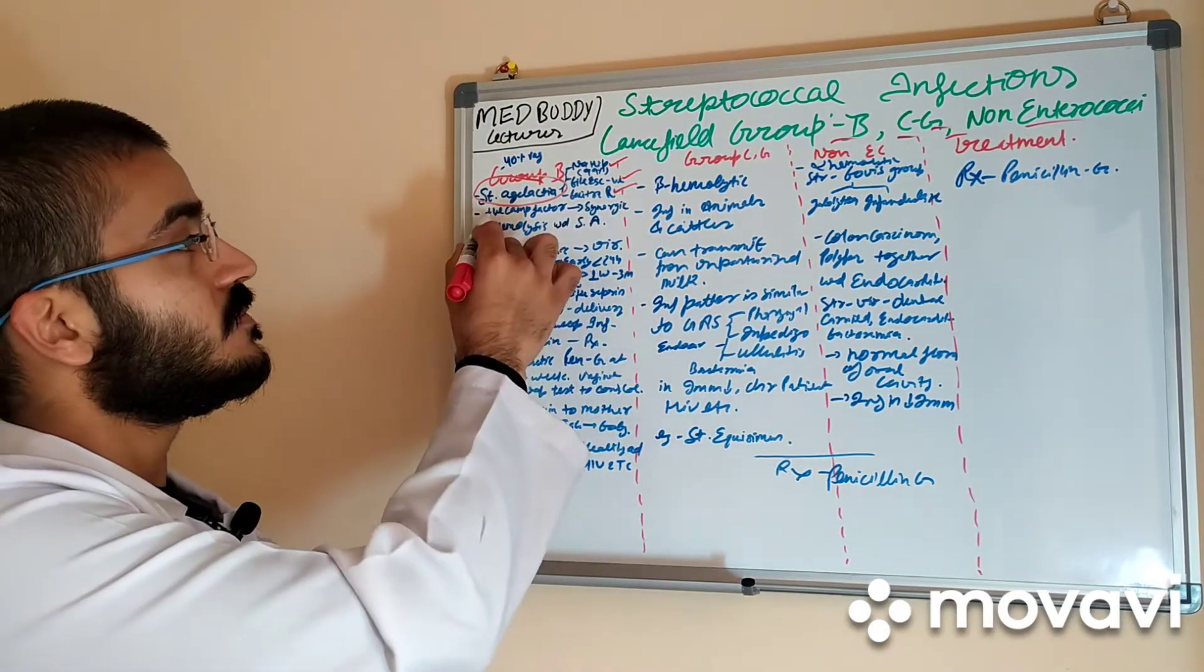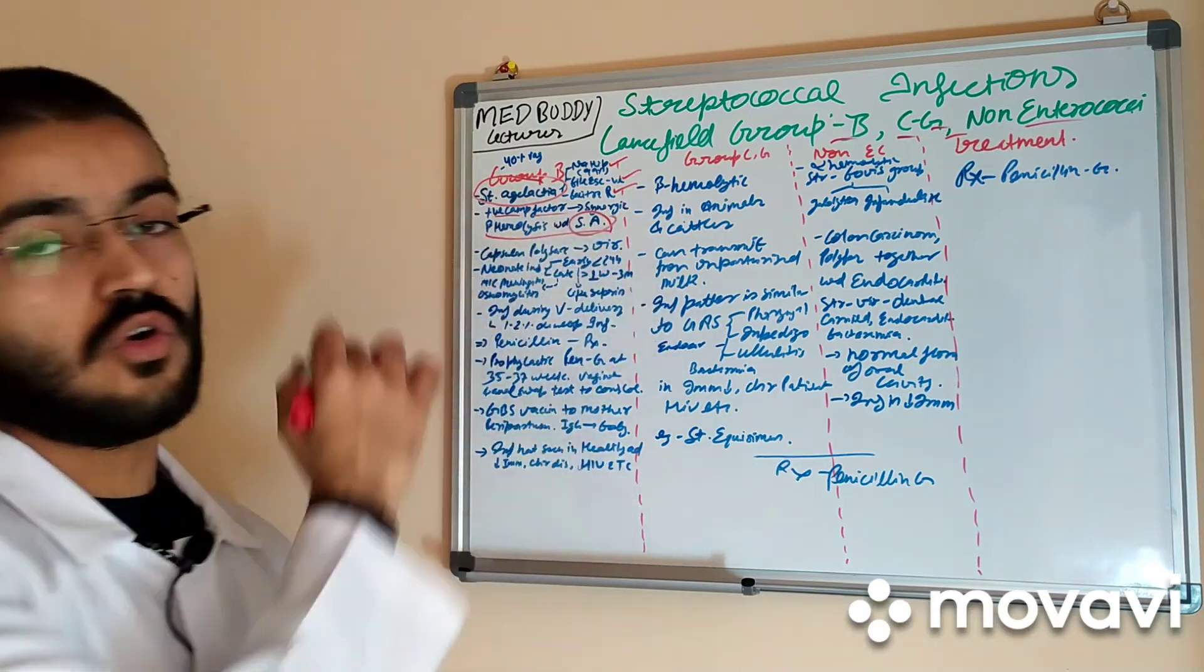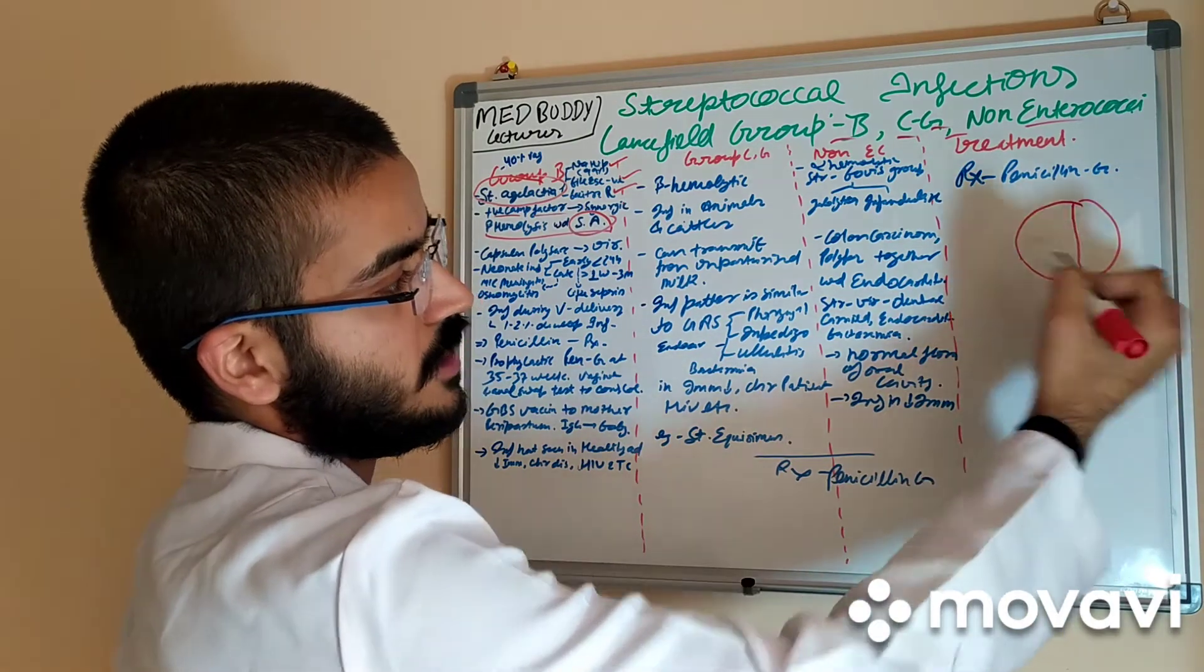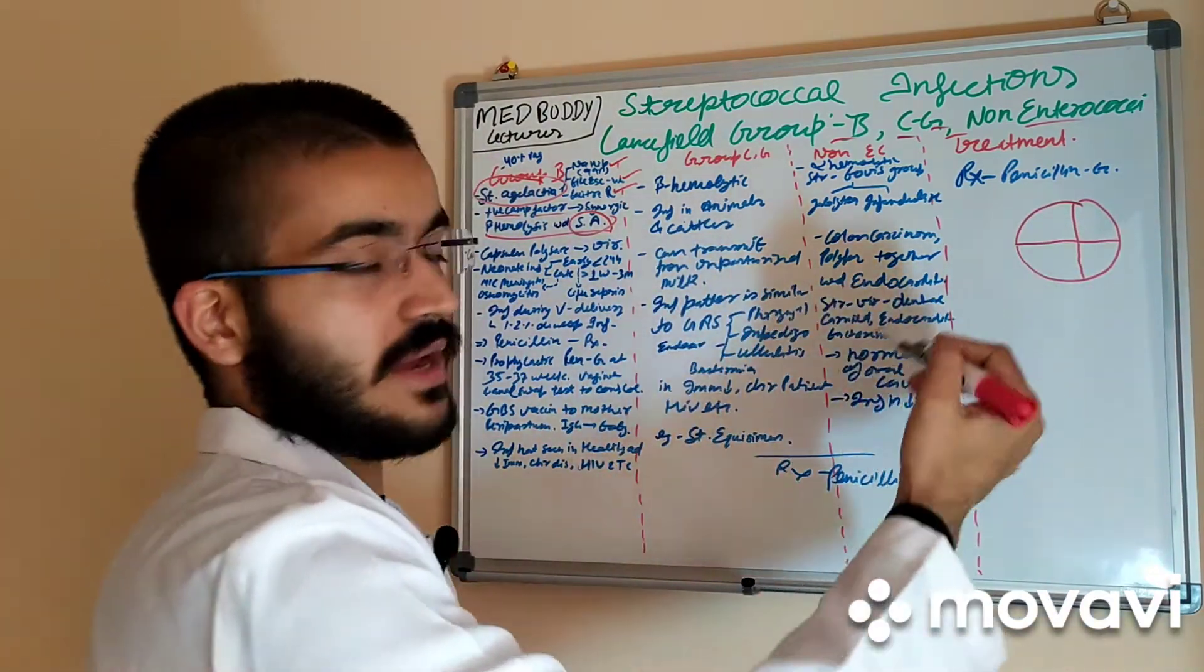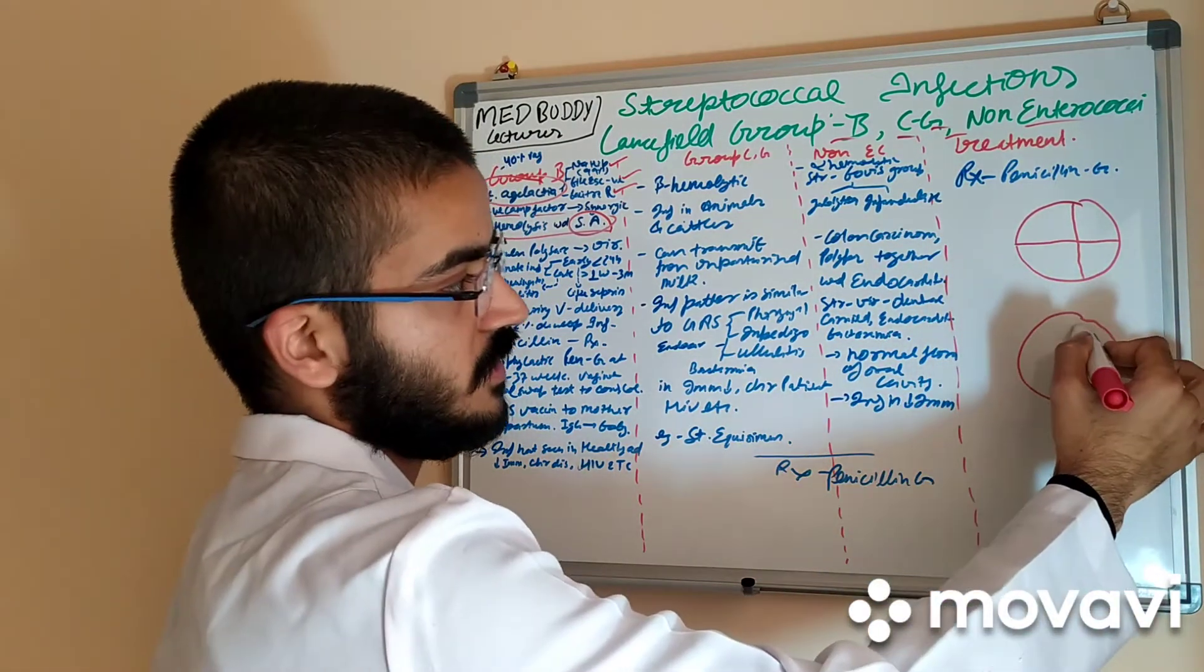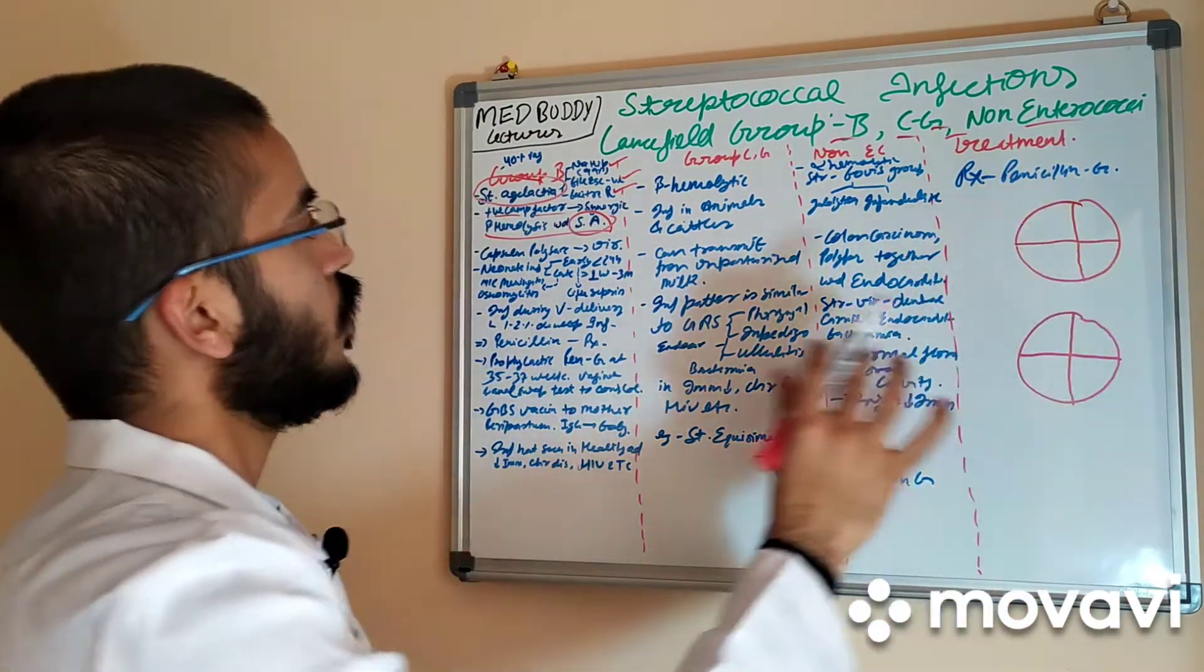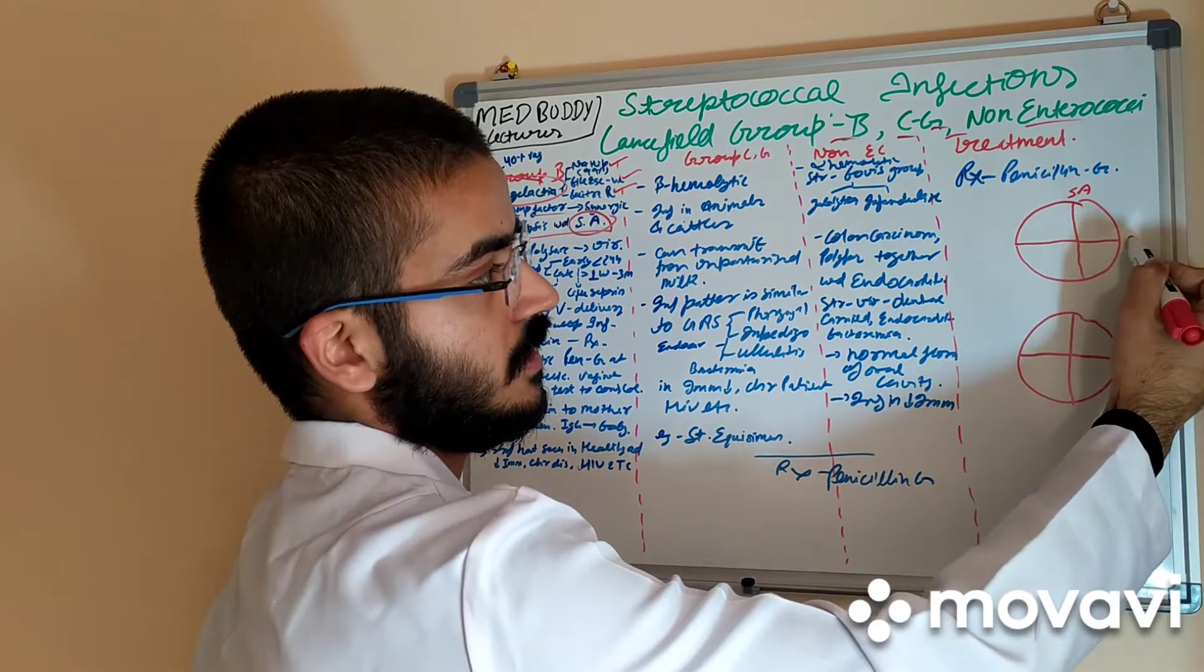This bacteria is positive for CAMP factor which forms synergistic beta hemolysis with staph aureus, which means if we have a culture blood agar and here we make a streak of staph aureus and here a streak of any of the group B bacteria. Now here is another petri dish with blood agar. Here staph aureus and here let's take group A bacteria.